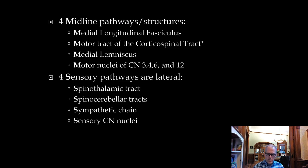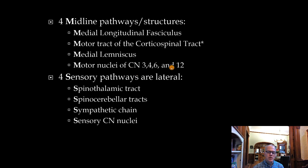Another rule of four: there are four midline pathways or structures that start with M. The medial longitudinal fasciculus and medial lemniscus, as their names indicate, are medial. The corticospinal motor tract is midline — true in the medulla and pons, though in the midbrain it's actually lateral. The motor nuclei that divide evenly into twelve are midline: three, four, six, and twelve. Sensory pathways are in a lateral location — the spinothalamic tract, spinocerebellar tracts, sympathetic chain, and sensory cranial nerve nuclei.